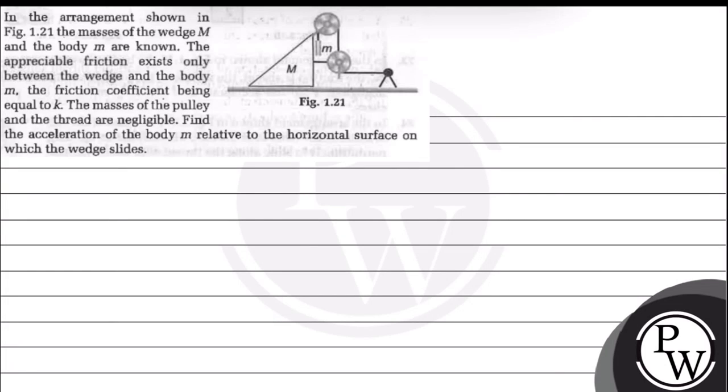Let's read this question. In the arrangement shown in figure, the masses of the wedge M and the body m are known. The appreciable friction exists only between the wedge and the body m, the friction coefficient being equal to k. The masses of the pulley and thread are negligible. Find the acceleration of the body m relative to the horizontal surface on which the wedge slides.